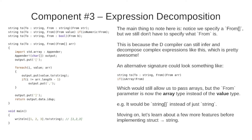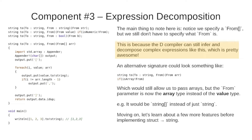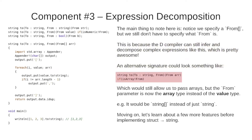This also allows me to introduce another component called expression decomposition. The main thing to note is that we specify a From array but we don't specify what From actually is. This is because the compiler can still infer and decompose complex expressions like this, which is pretty awesome. An alternative signature could use a constraint isArray to enforce that From is an array, but then the From parameter is the full array type rather than its element type since we don't decompose it.